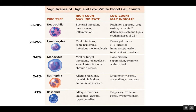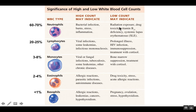One way to remember the order is the mnemonic: never let monkeys eat bananas. So neutrophils are the most abundant, lymphocytes are the second most abundant, then monocytes, eosinophils, and finally basophils. The table shows what it might mean if we have high or low counts of each of these white blood cells.